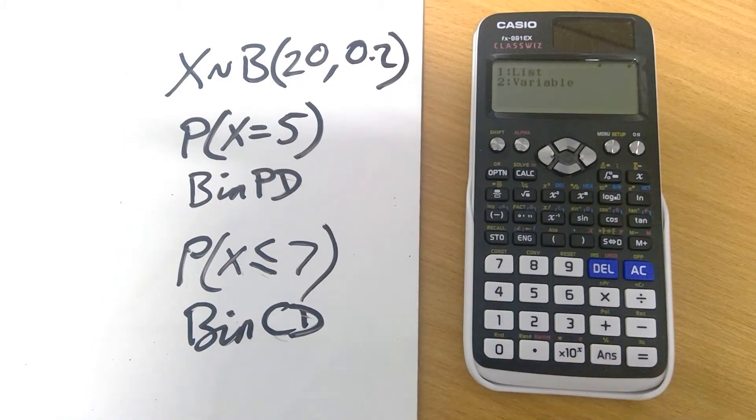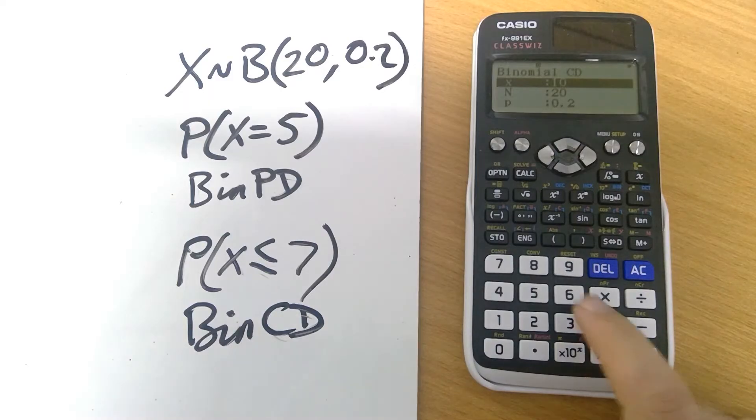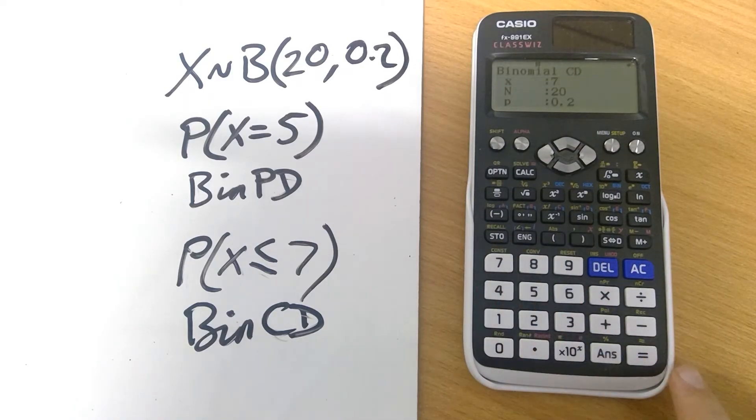And again, we've got list and variables. So we just want the answer to one question. Let's do variable. And here we need to enter those values. We were going up to 7 and 20 and 0.2 is fine. So press it and there's our value. And that tallies with what we would expect. So 0.9678, et cetera.